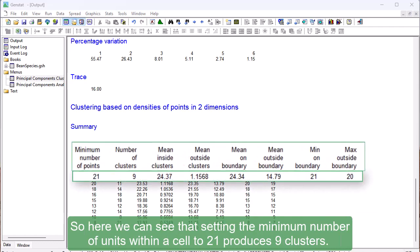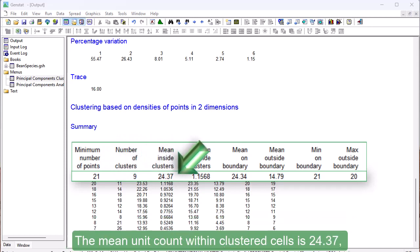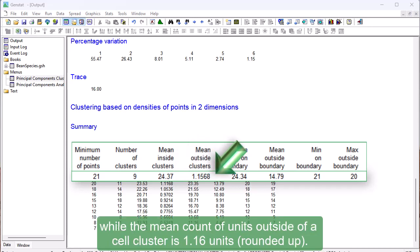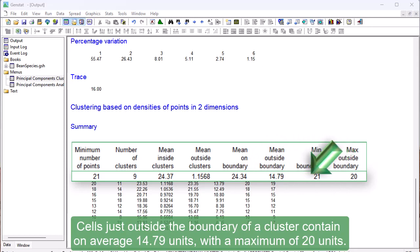So here we can see that setting the minimum number of units within a cell to 21 produces 9 clusters. The mean unit count within clustered cells is 24.37, while the mean count of units outside of a cell cluster is 1.16 units. Cells just inside the boundary of a cluster contain on average 24.34 units with a minimum of 21 units. Cells just outside the boundary of a cluster contain on average 14.79 units with a maximum of 20 units.